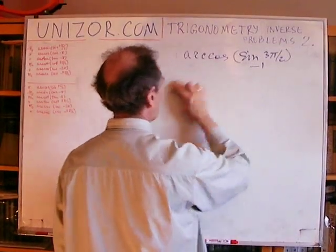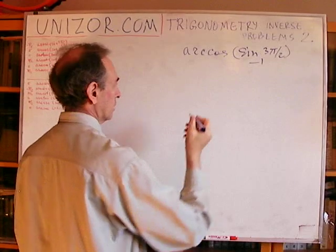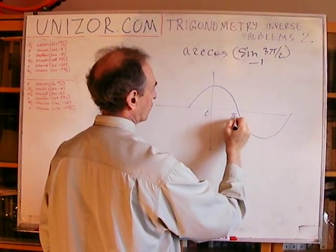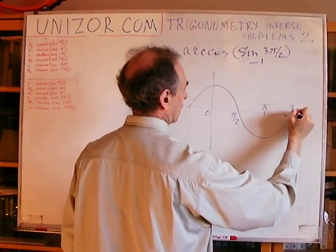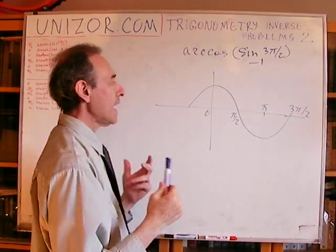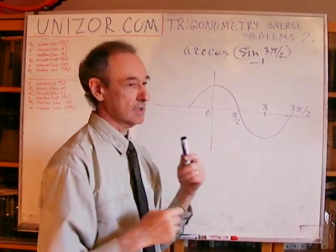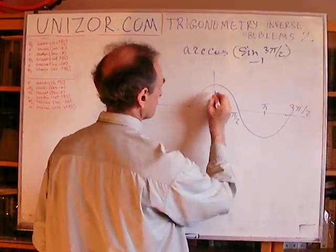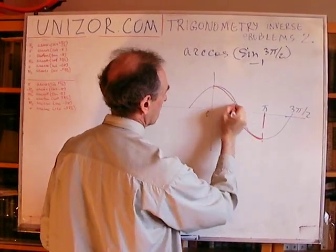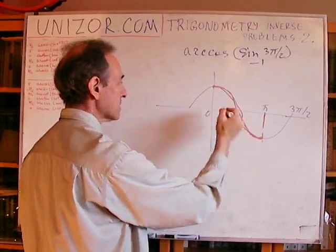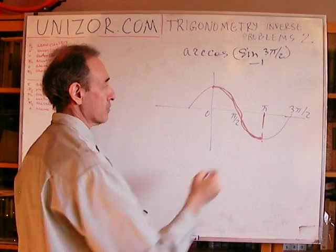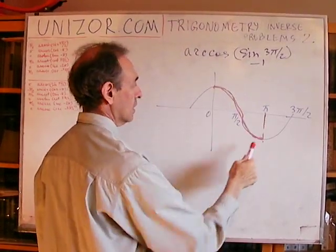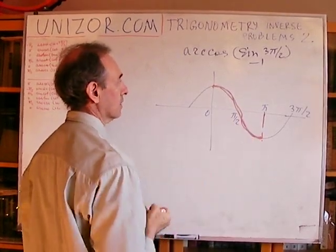Now, what's the arc cosine of minus 1? Let's think about the graph of the arc cosine. The graph of the cosine goes from 0 through π/2 to π, etc. We have to concentrate on the area where the cosine is invertible and monotonic. The region traditionally chosen is from 0 to π. Within this area, where does the cosine equal minus 1? Obviously, it's π. So, the arc cosine of minus 1 is equal to π.